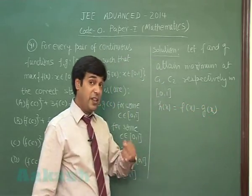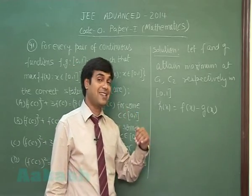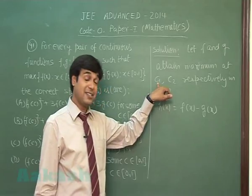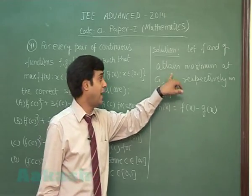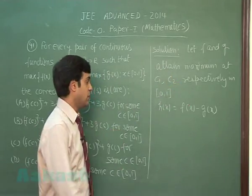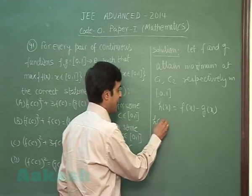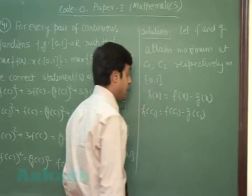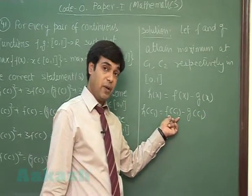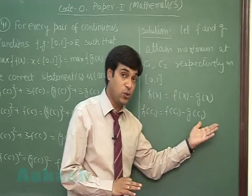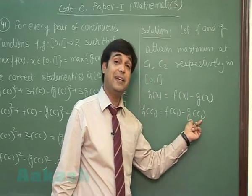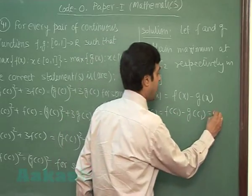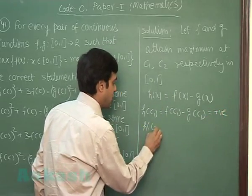It is given that the maximum of f(x) equals maximum of g(x). f(x) is attaining its maximum at c₁ while g(x) at c₂. So we can check h(c₁): since f(c₁) is maximum which equals g(c₂), obviously g(c₁) will be less than g(c₂) because that's the maximum value. So it is going to be a positive number.